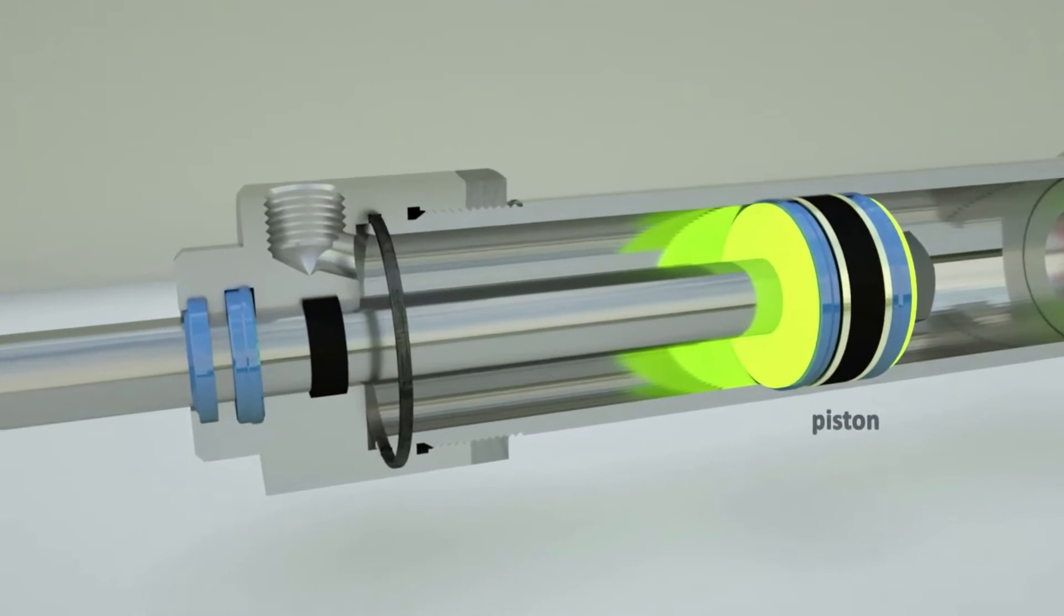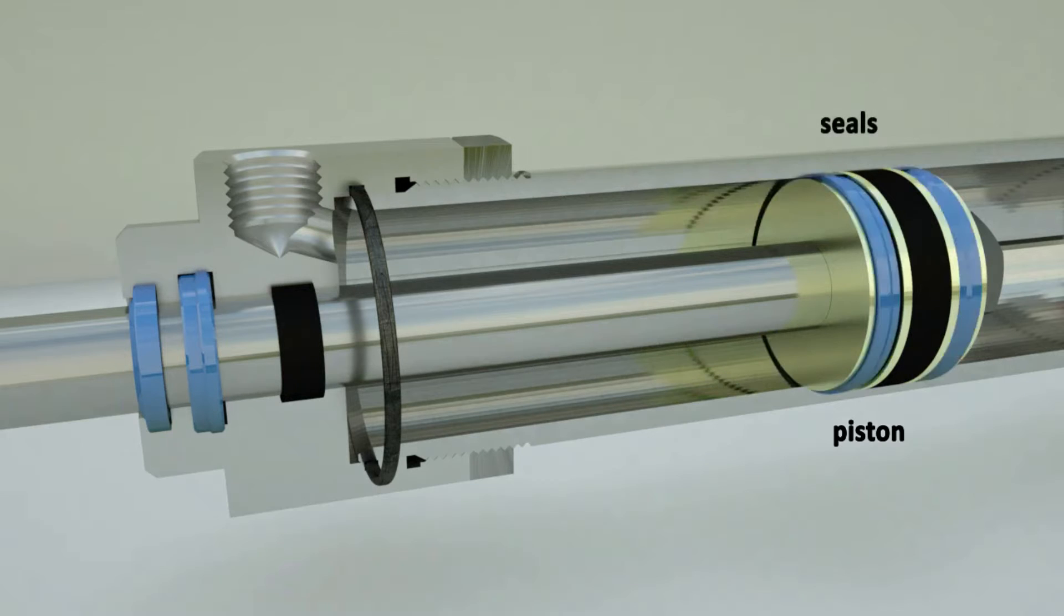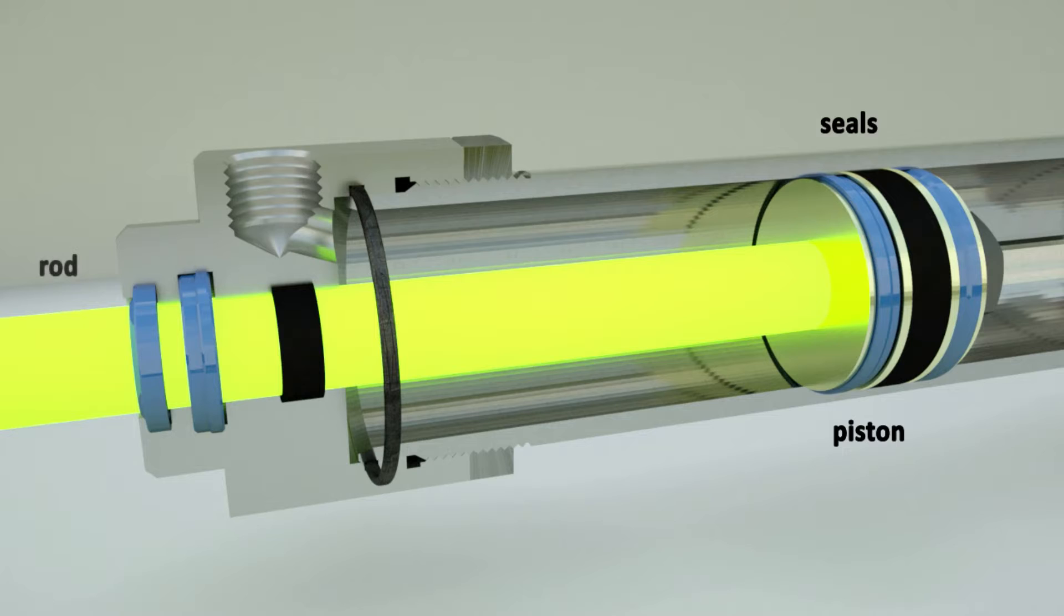The piston is equipped with a seal to draw the liquid from one chamber to the other. A rod is attached to the piston, and it transmits the force from the piston to the mechanism that moves the hydraulic cylinder.